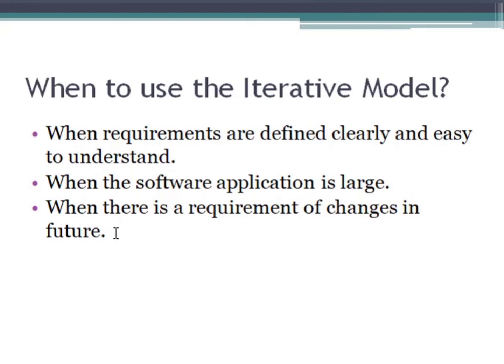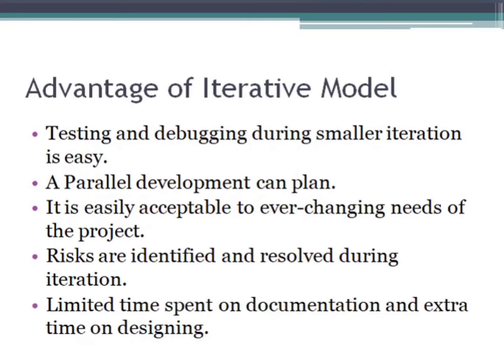The iterative model is also used when there is a requirement for changes in the future. When you expect changes in the project going forward, versions are created. Some software releases new versions — we work on the first version, and after two or three years, a new version is released with new changes. This model is also suitable when the requirements are defined clearly and are easy to understand.